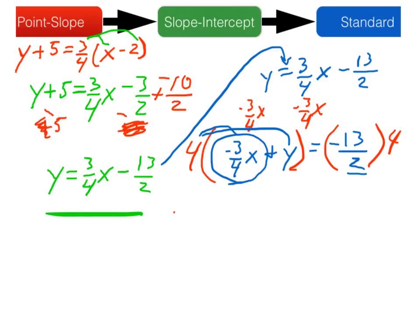So four times negative three-fourths is negative three. Four times y, of course that's just four y. And then negative thirteen over two times four is essentially like saying negative thirteen times two, so that gives us negative twenty-six. And then lastly, standard form, or at least proper standard form, does not include a negative value for the number that's attached to the x. So we'll want to multiply both sides of this equation by negative one.